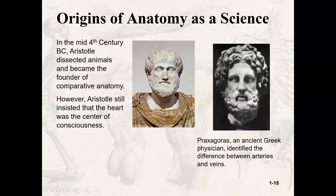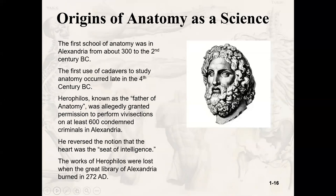Still in the 4th century BC, Aristotle was dissecting and comparing different animals — he's the father of comparative anatomy. Aristotle thought the heart was the center of all consciousness. Praxagoras, an ancient Greek physician, identified the difference between arteries and veins. The first real school of anatomy was in Alexandria — modern-day Cairo — from about 300 to somewhere in the 2nd century BC. Late in the 4th century BC, we saw the first use of cadavers to study anatomy. Herophilus, now the father of anatomy, was allegedly granted permission to perform vivisections on condemned prisoners in Alexandria. A vivisection is when you dissect something while it's still alive.